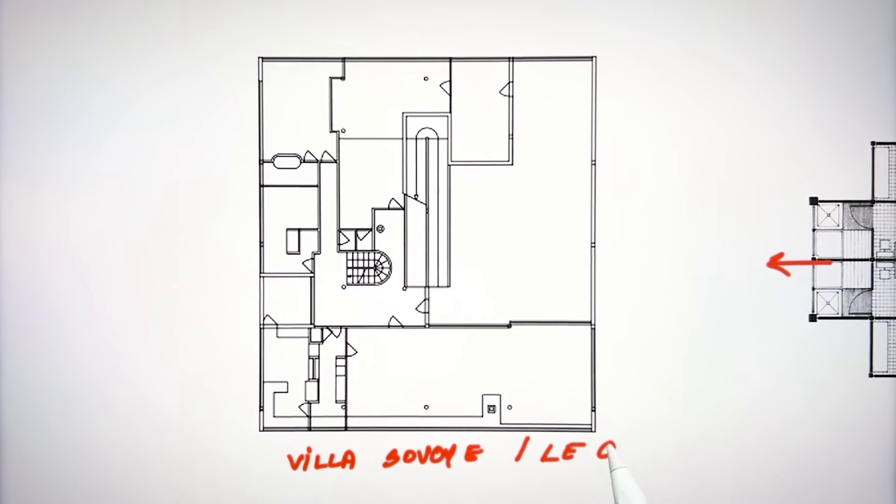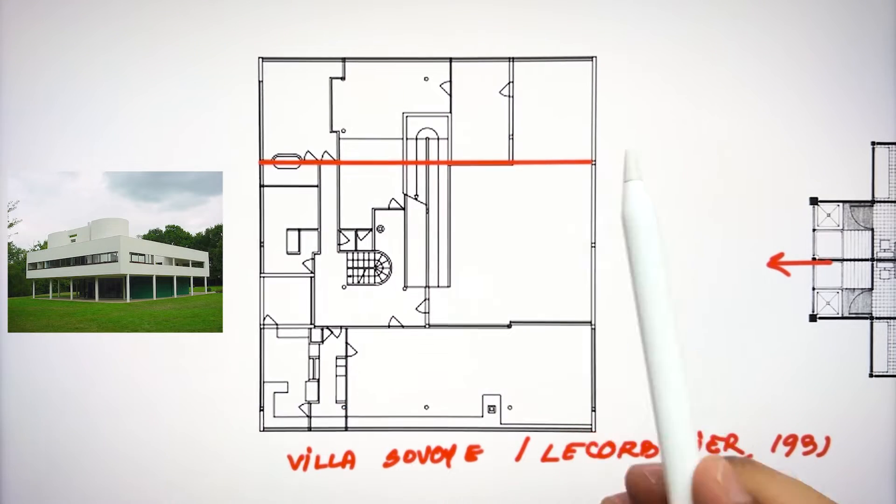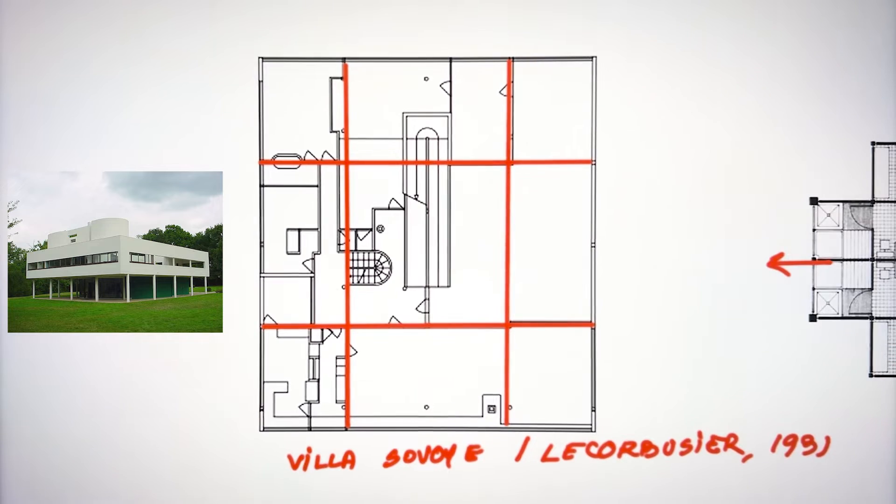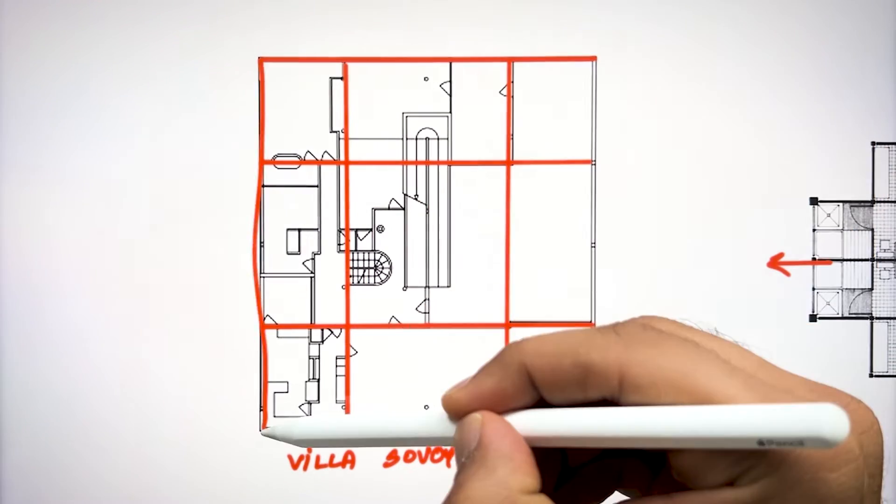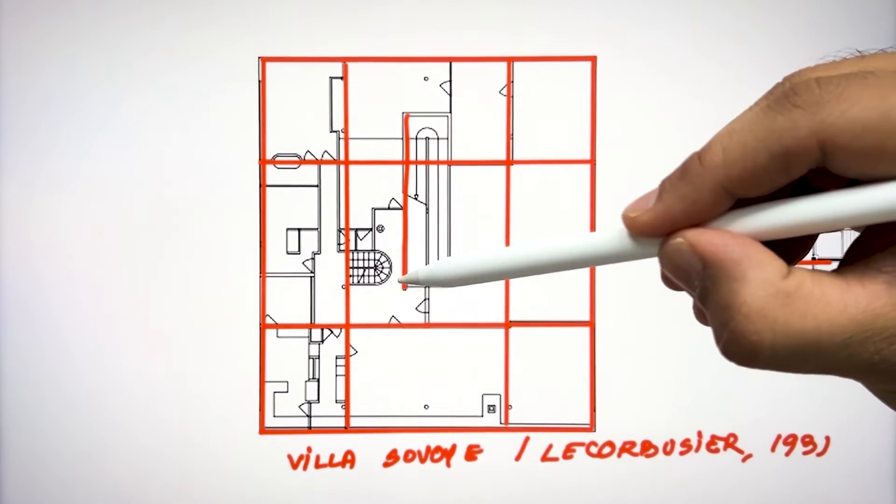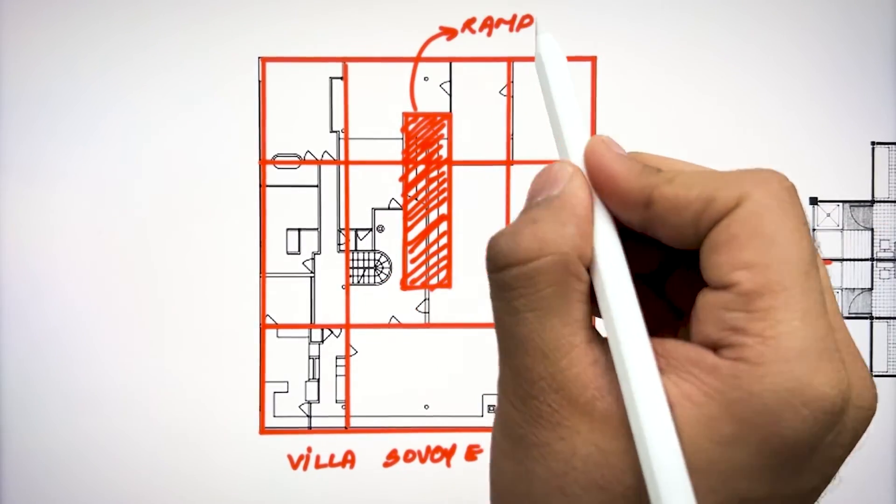Corbusier in 1931 also used the concept of nine grid system in Villa Savoye. He took the inspiration from Andrea Palladio. He emphasized the center area of ramp and followed the system of grid pillars into the design. In this way, he created one of his principles of free floor planning.